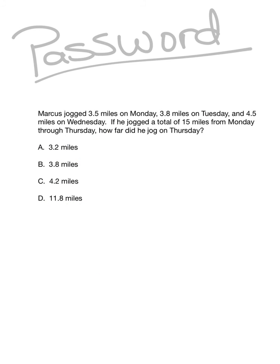Now let's take a look at our password for today's lesson. Be sure you respond to the word problem below and bring the answer with you to class tomorrow. Marcus jogged 3.5 miles on Monday, 3 and 8/10 miles on Tuesday, and 4 and 5/10 miles on Wednesday. If he jogged a total of 15 miles from Monday through Thursday, how far did he jog on Thursday? Is it 3 and 2/10, 3 and 8/10, 4 and 2/10, or 11 and 8/10 miles? Record your answer and bring it to class tomorrow.